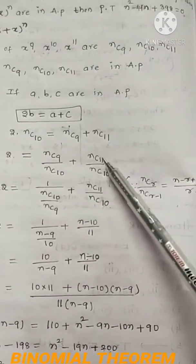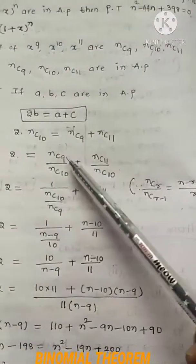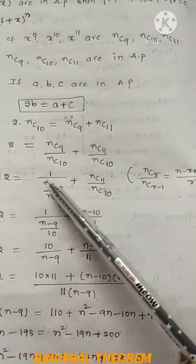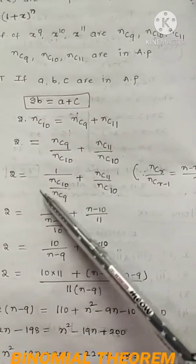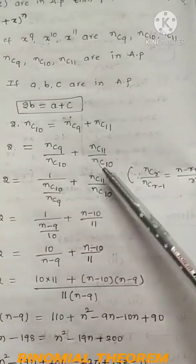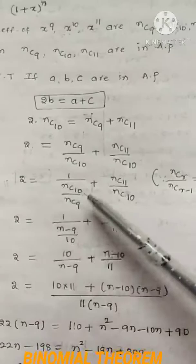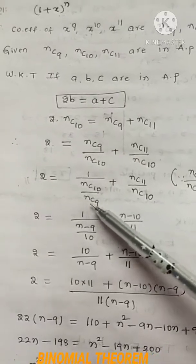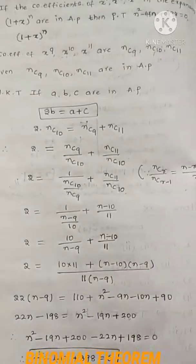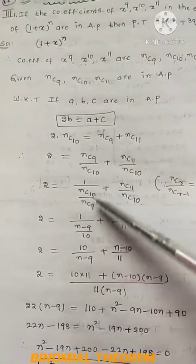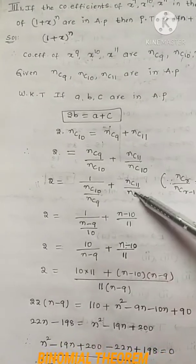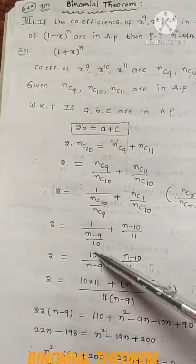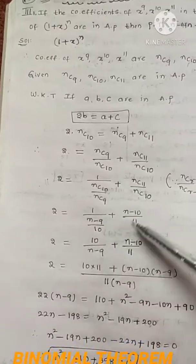Using the formula for nCr/nCr-1, when the top number is bigger than the bottom, we subtract: nC10/nC9 gives (n-9)/10. So 1 divided by (n-9)/10, then 10 shifts to the numerator giving 10/(n-9). Similarly, nC11/nC10 gives (n-10)/11. Therefore we have 2 = 10/(n-9) + (n-10)/11.